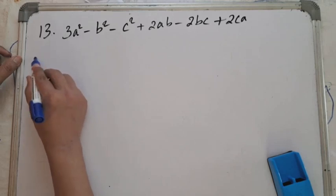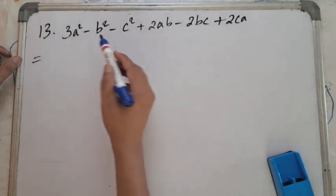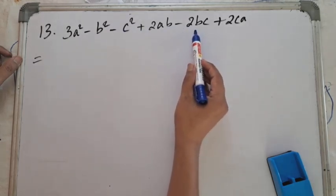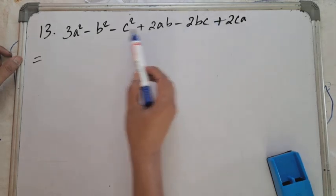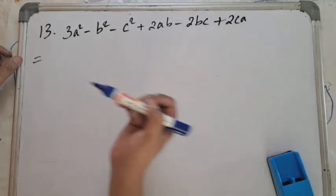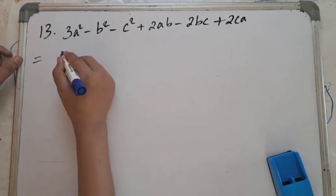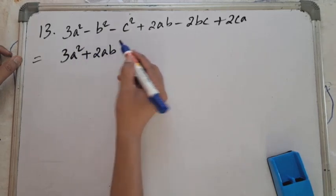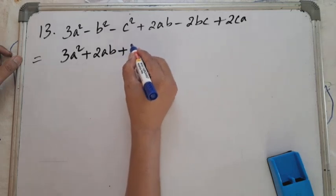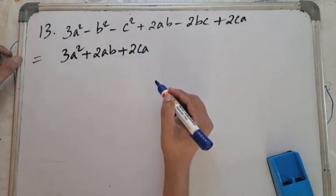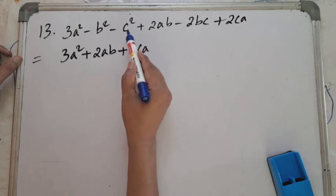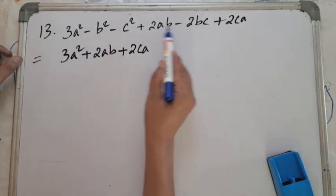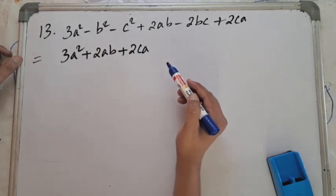To factorize, we first write -b² - c² - 2bc together to make a perfect square. The remaining terms 3a² + 2ab + 2ca are written together. Then we take minus sign common from the group -b² - c² - 2bc.